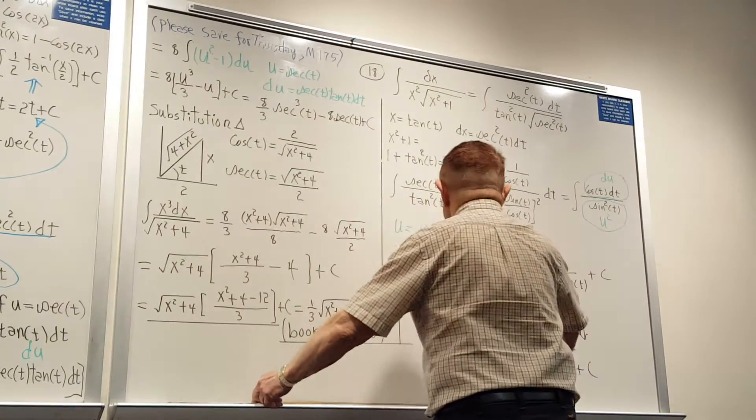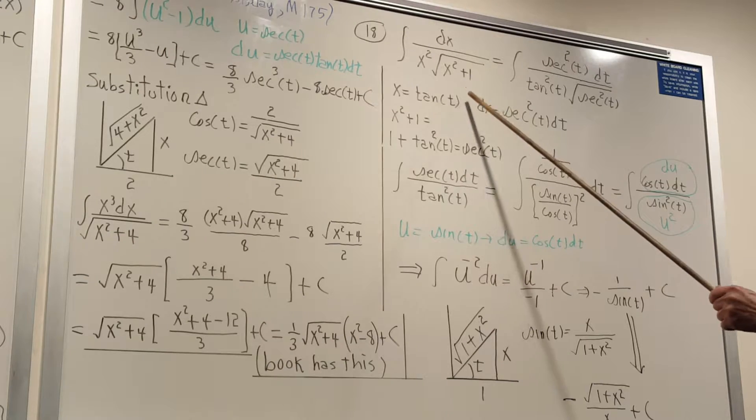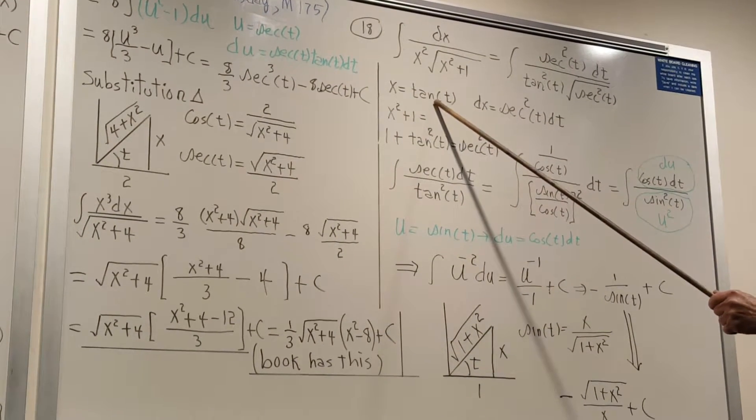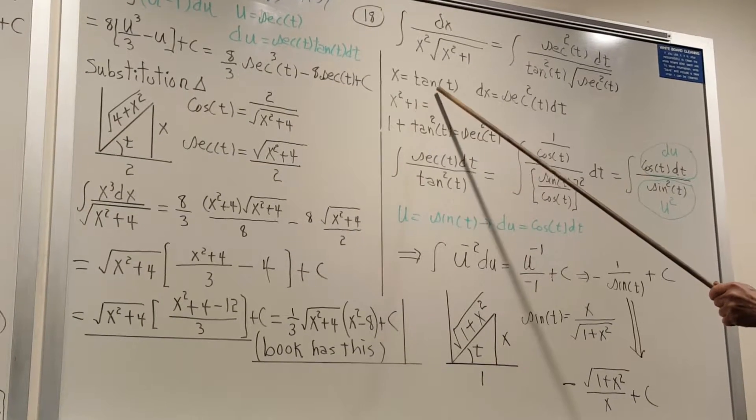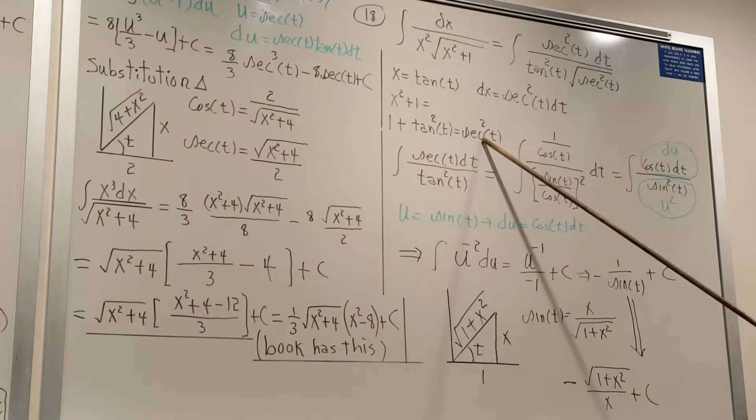We have the sum of squares, so again it's going to be a tangent, and the x squared plus 1 then is 1 plus tangent squared is secant squared.